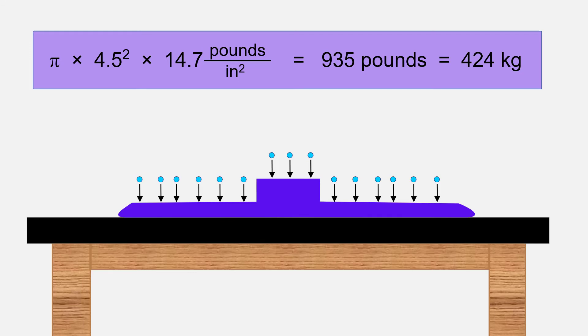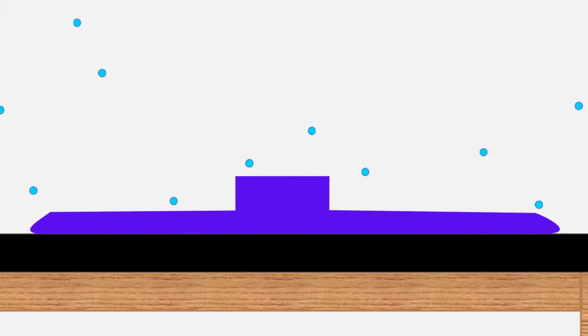The weight pushing down on the surface of the suction cup resulting from the collective force of thousands of trillions of collisions on the surface by fast-moving air particles. Lifting that suction cup off the table would be the same as lifting 935 pounds or a 424 kilogram mass.